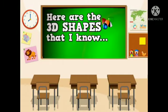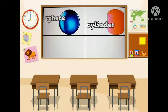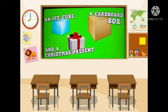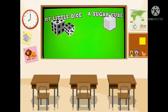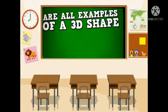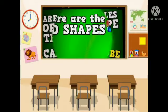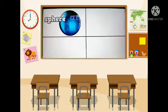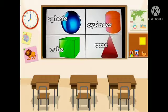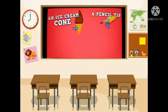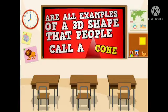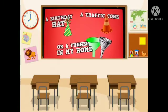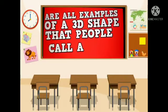Here are the 3D shapes that I know: a sphere, a cylinder, a cube, and a cone. An ice cube, a cardboard box, and a Christmas present are all examples of a 3D shape that people call a cube. My little dice, a sugar cube, and blocks are also examples of a cube. And an ice cream cone, a pencil tip, and a megaphone are all examples of a cone. A birthday hat, a traffic cone, or a funnel are all examples of a cone.